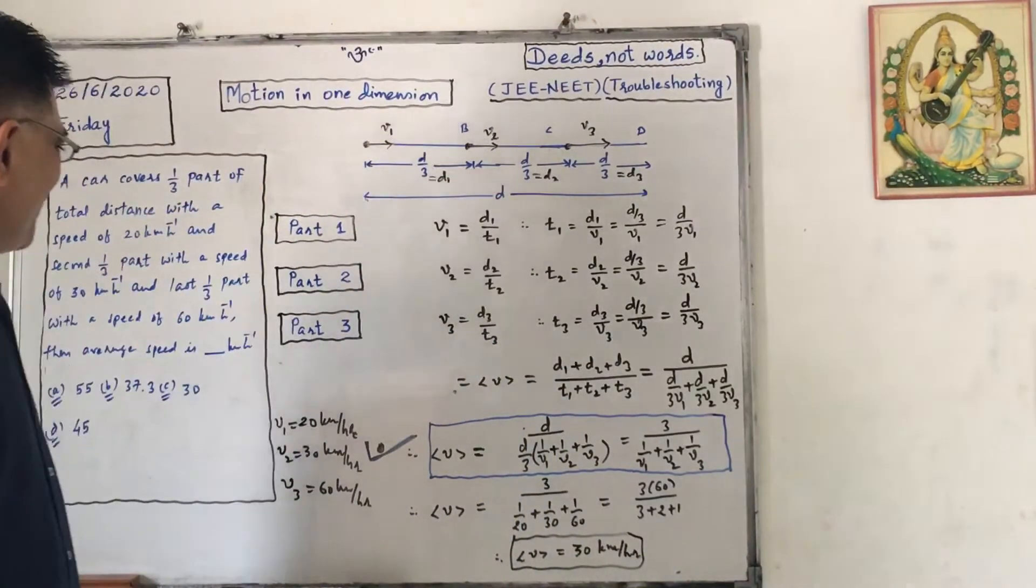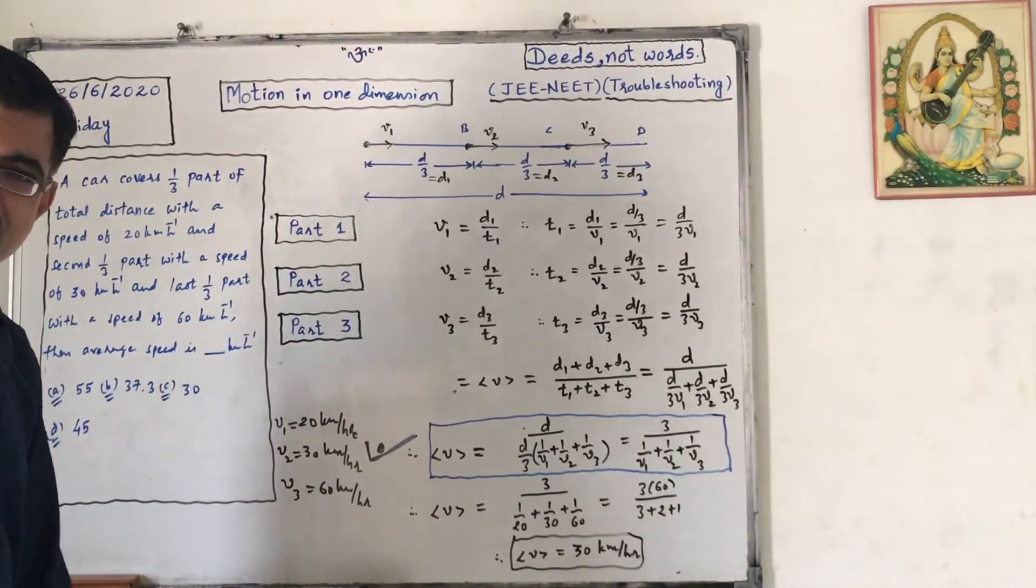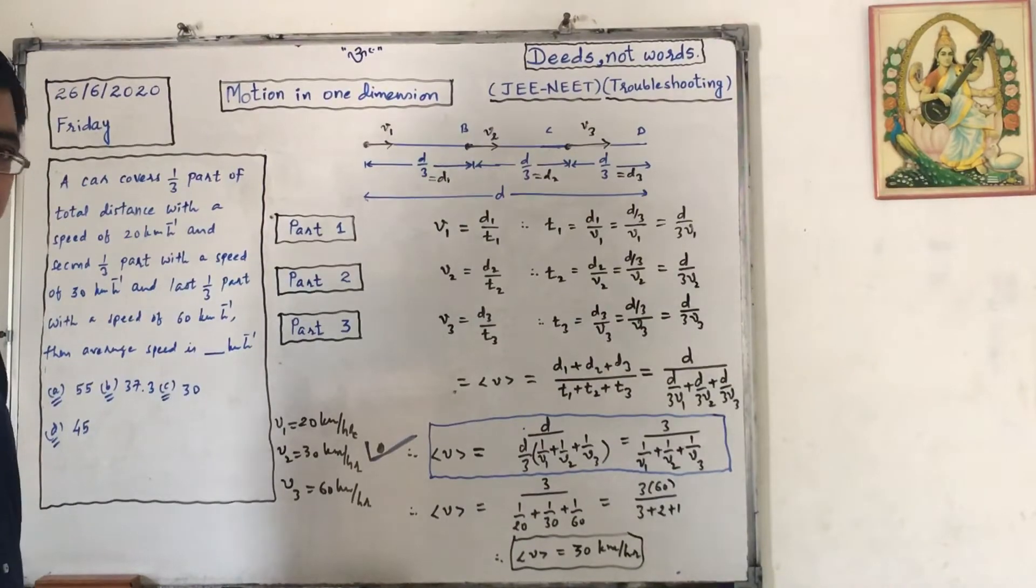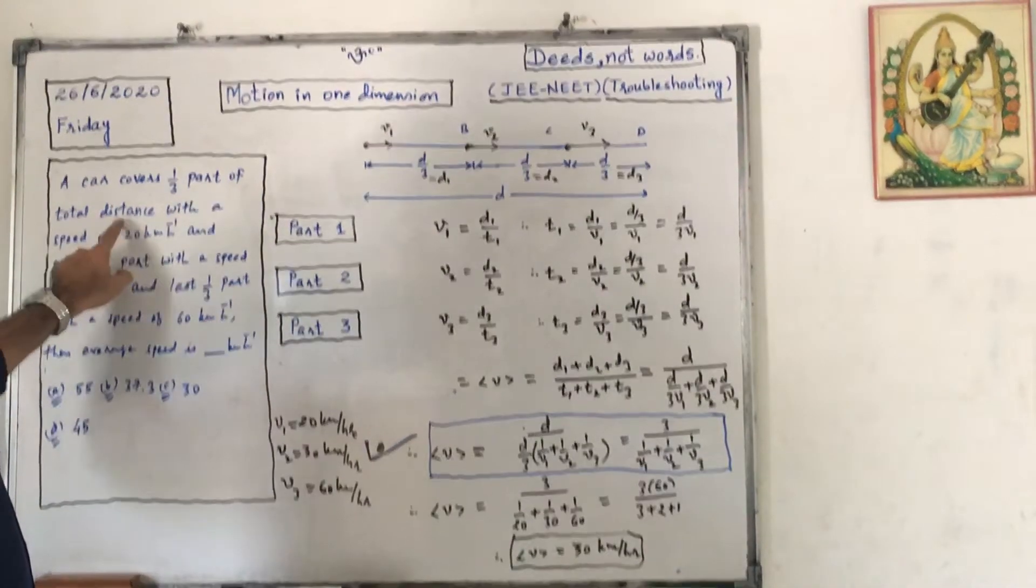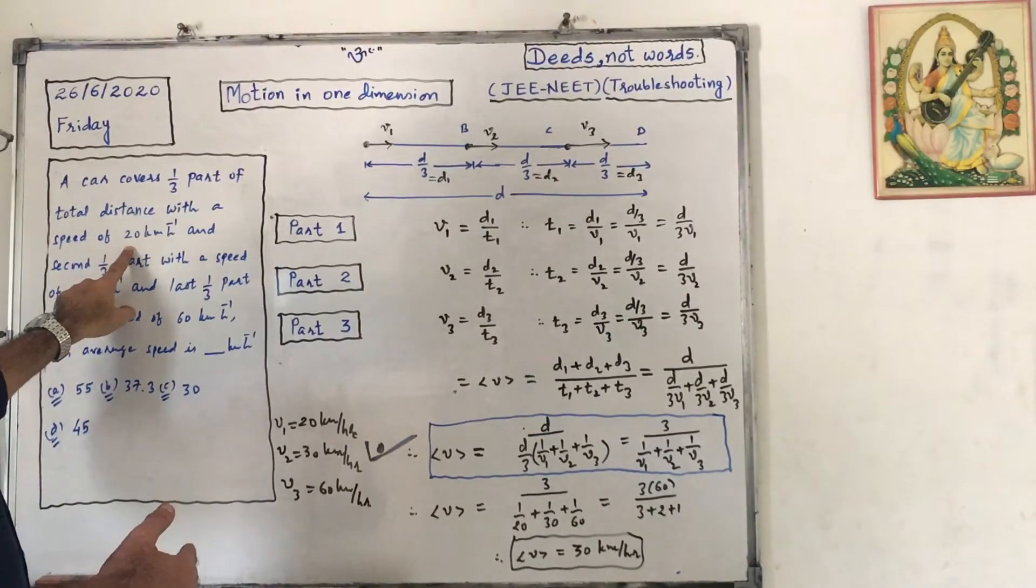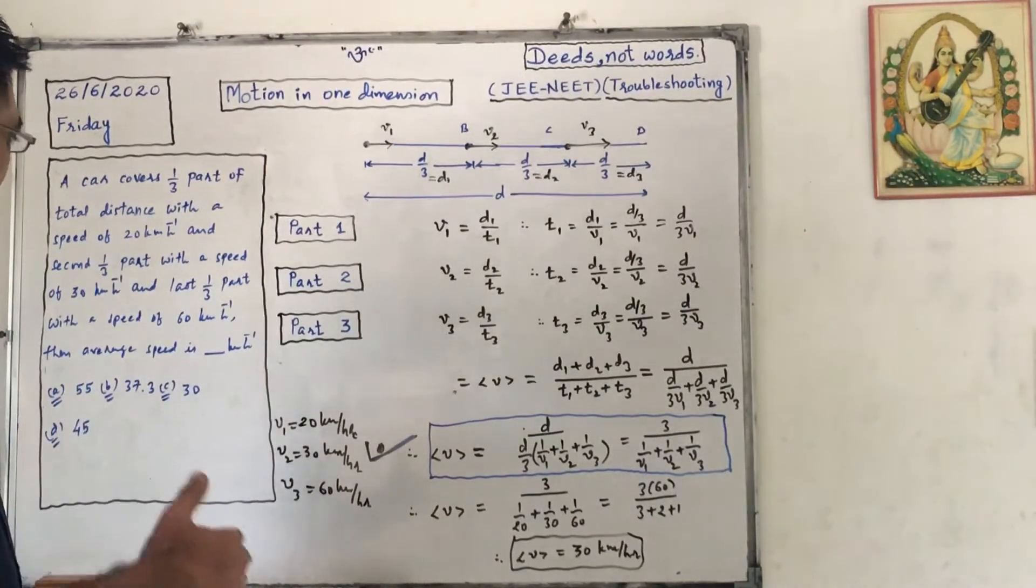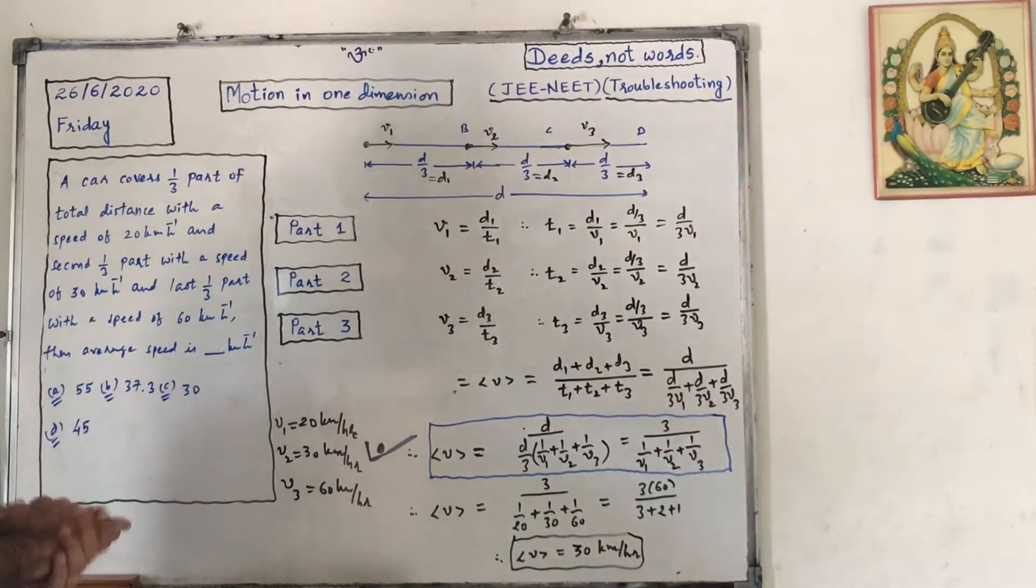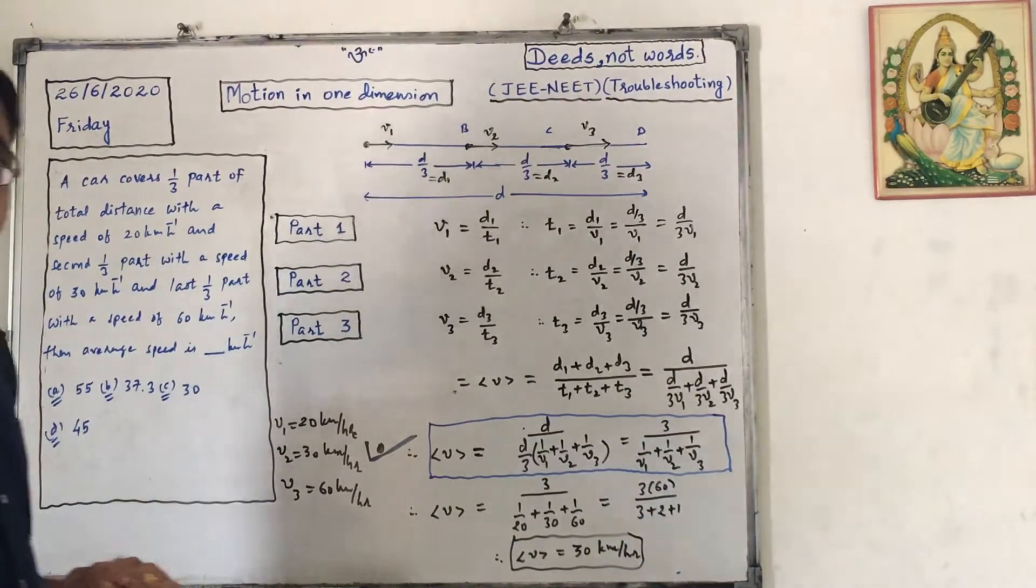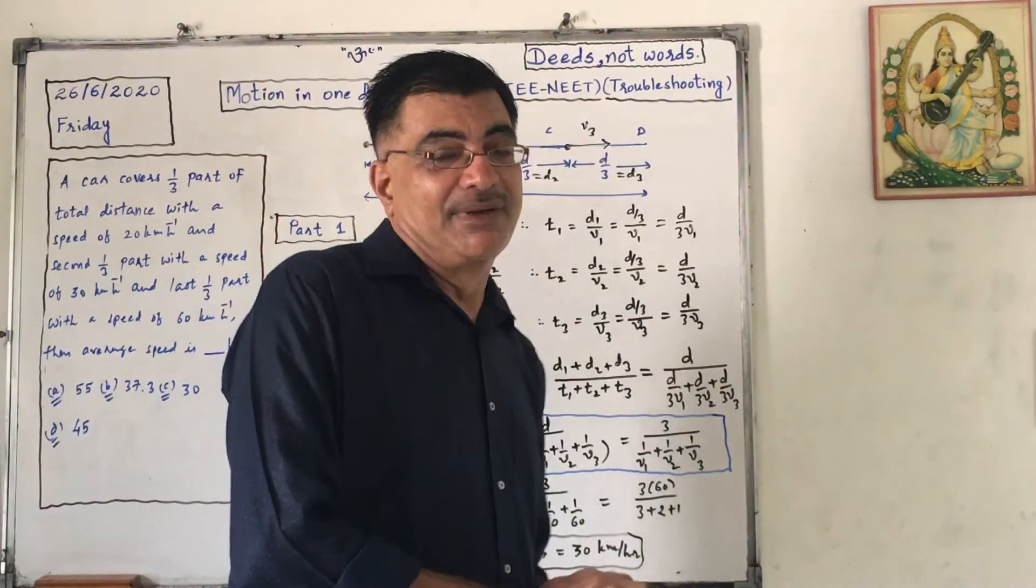This was the question asked by me as a difficulty by a genius student. A car covers one third part of total distance with a speed of 20 km per hour and second one third part with a speed of 30 km per hour and last one third part with a speed of 60 km per hour. Then find average speed in km per hour. That is the problem.